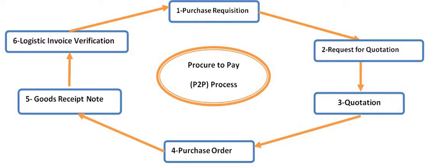The second stage of the P2P cycle is the Request for Quotation, commonly called RFQ. The purchasing or MM department of a company sends the RFQ to all vendors to get the best prices. The RFQ can be sent manually or can be raised with respect to a purchase requisition. The purchasing department sends it to all vendors for the best prices.